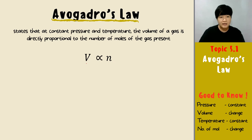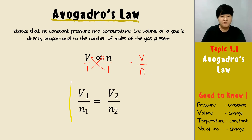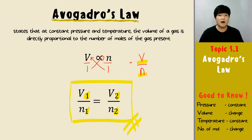Since we agree that volume is directly proportional to n, we derive the formula by cross-multiplying, giving us V/n equals a constant. For two different conditions, the formula of Avogadro's Law is: V1/n1 = V2/n2.